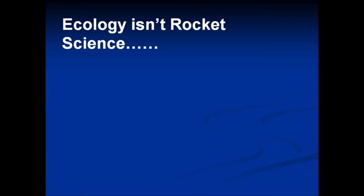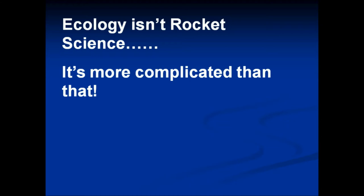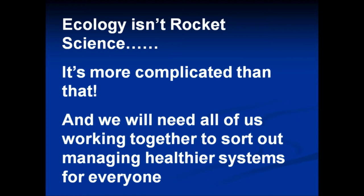Somebody once said ecology isn't rocket science — it's a bit more complicated than that. It's not physics. In physics you can write relatively simple equations and the systems follow them clearly, but with ecosystems there are a lot of feedbacks and it's also based on antecedent conditions. So it becomes more complicated. We have to understand all the different aspects of the system affecting us — physical, chemical, biological, economic, and social — and how they all interact to create the systems and the consequences of decisions we've made.